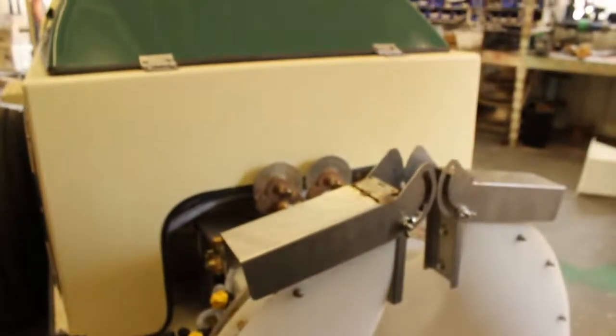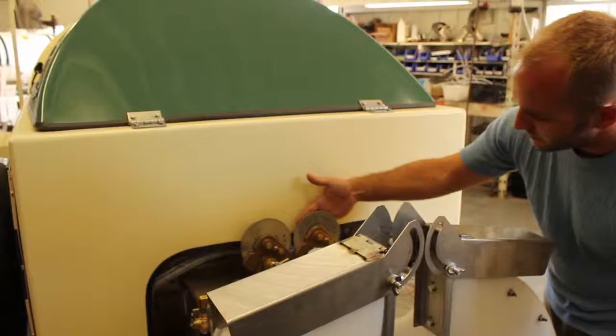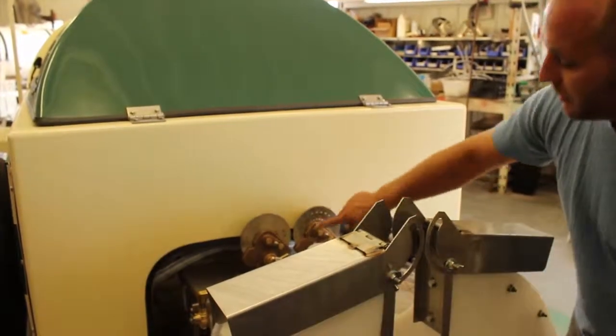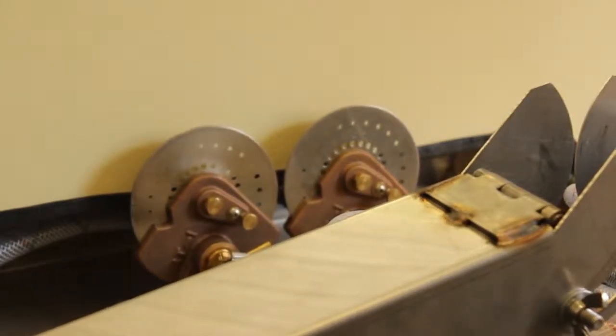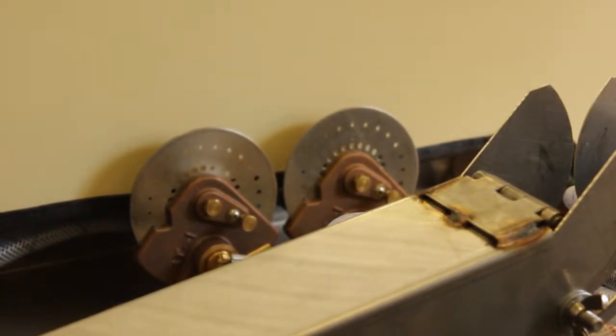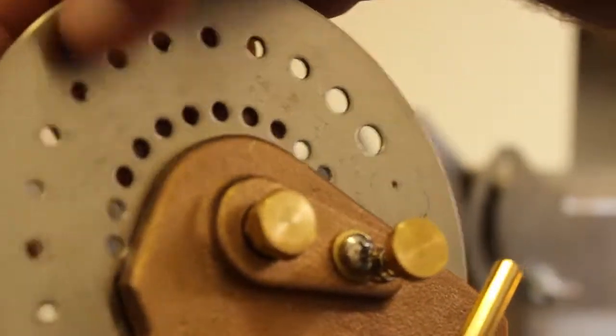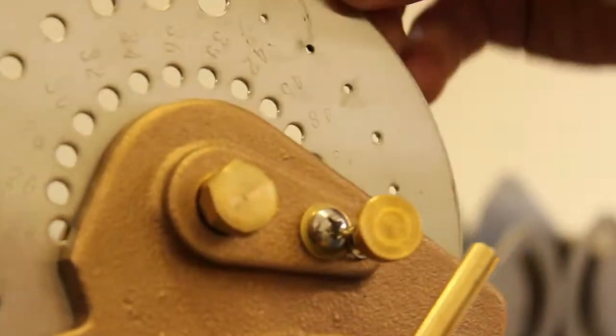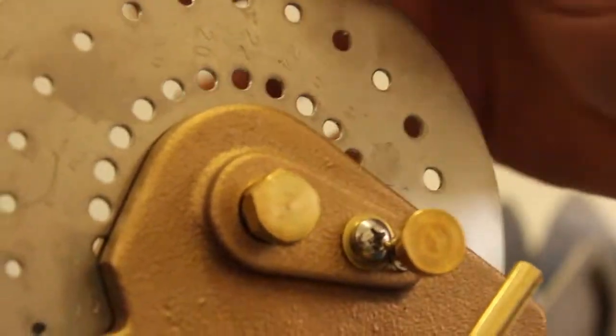So, we move over here to our sprayer. These are the metering discs. They have numbers, which I will grab one and show you. They are numbered. The holes of different sizes. This is a big hole, small hole. See that? These numbers correspond to different holes.